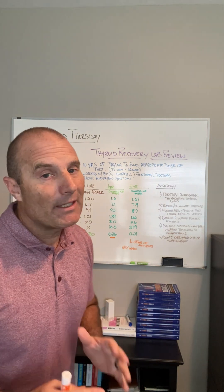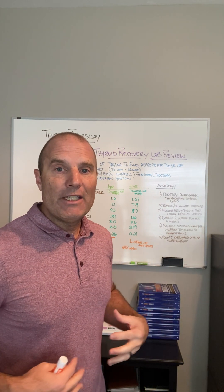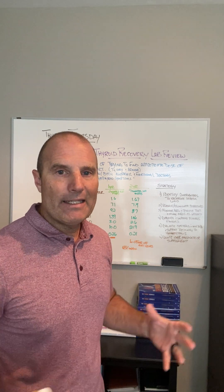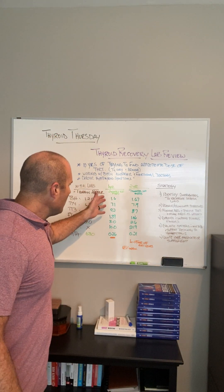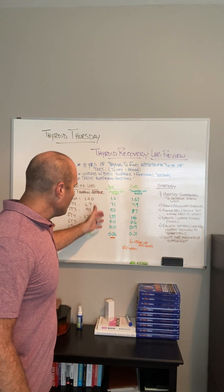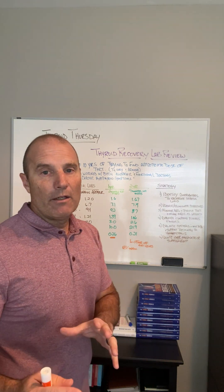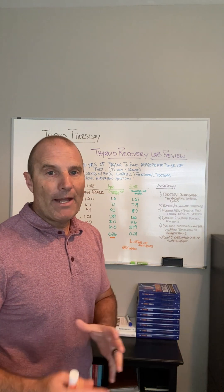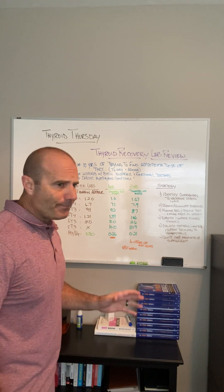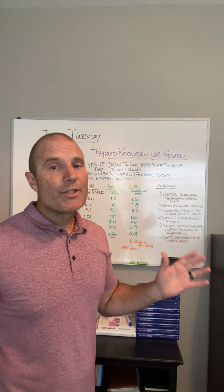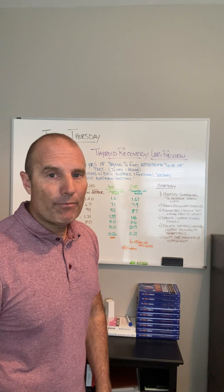The free T3 to free T4 conversion is still lower than I want to see it, but keep in mind we've got a person with a chronic GI pathology — a colitis process going on. We continue to work on their diet and lifestyle factors. The person is doing better and better. At the one-year mark, we're somewhere in the 60–70% improvement range.